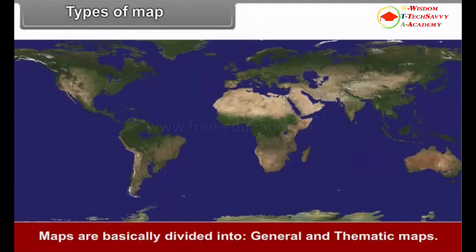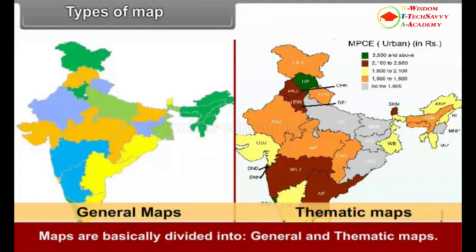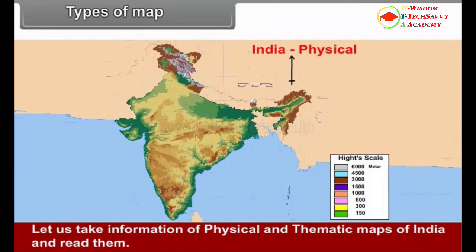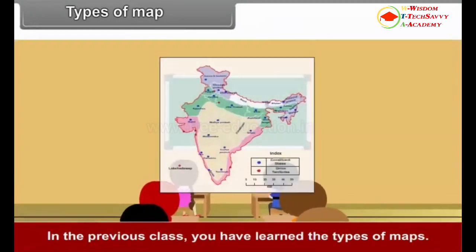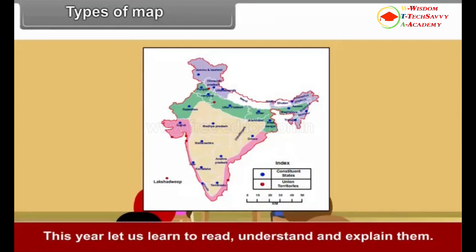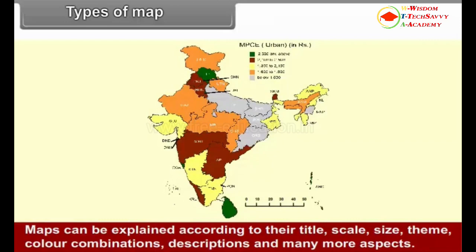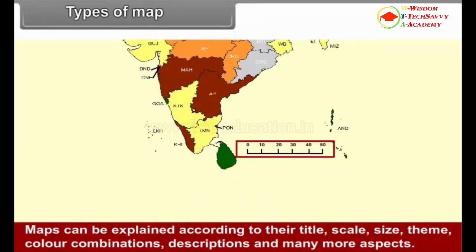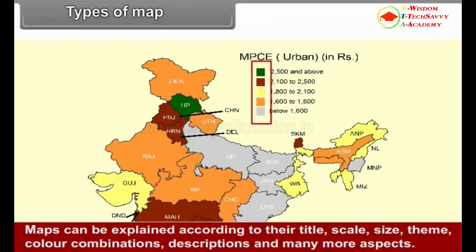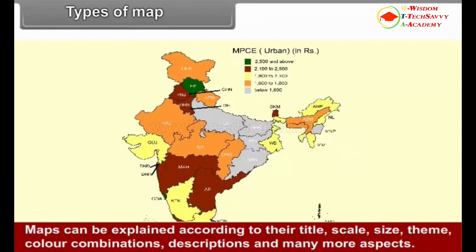Maps are basically divided into general and thematic maps. One needs to develop the skill to read maps and understand them. In the previous class, you learned the types of maps. This year, let us learn to read, understand and explain them. Maps can be explained according to their title, scale, size, theme, color combinations, descriptions and many more aspects.